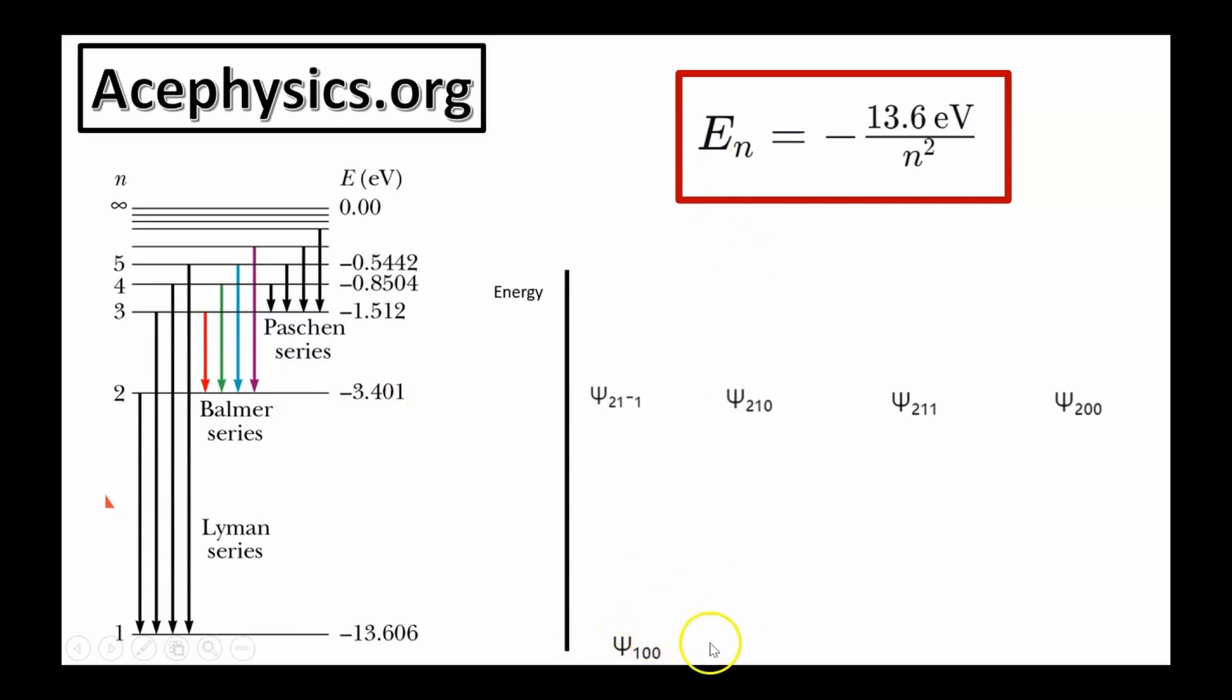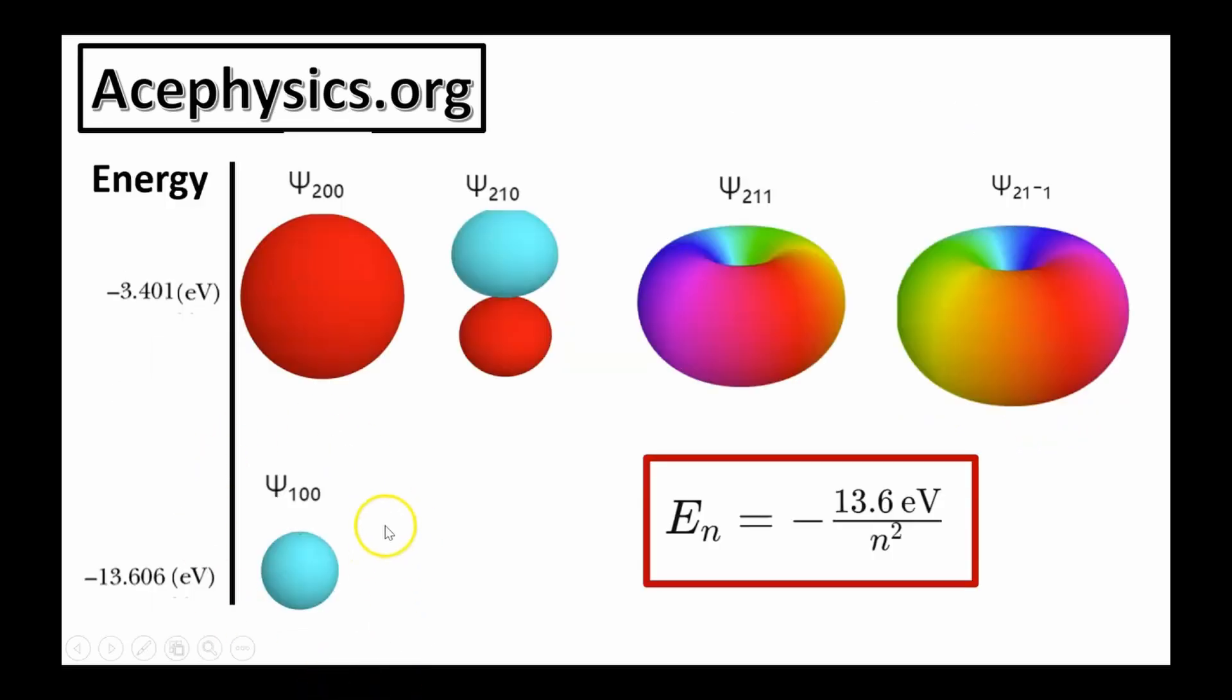For n equals 1, there's one wave function psi 1, 0, 0. For n equals 2, there are four wave functions, psi 2, 1 minus 1, psi 2, 1, 0, psi 2, 1, 1, and psi 2, 0, 0. On this slide, I plotted the wave function corresponding to the principal quantum number n equals 1 and the four wave functions corresponding to the principal quantum number n equals 2. As you can see, these are all larger. They're physically larger than this one is. That means that the electron is farther away from the origin, which means that it has a smaller energy.